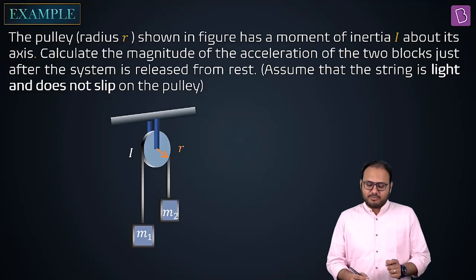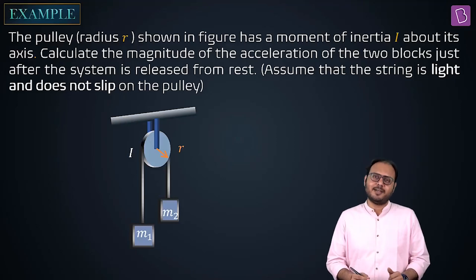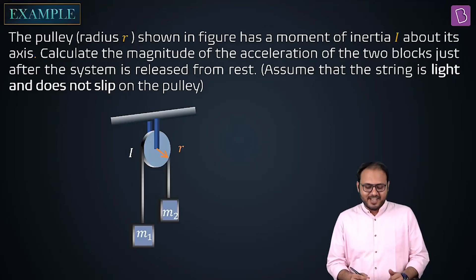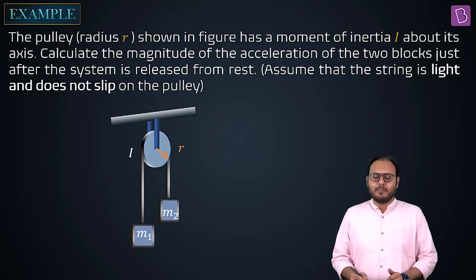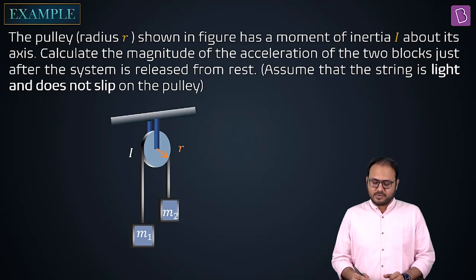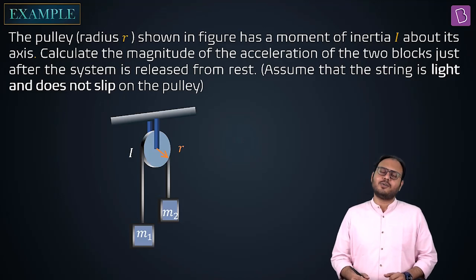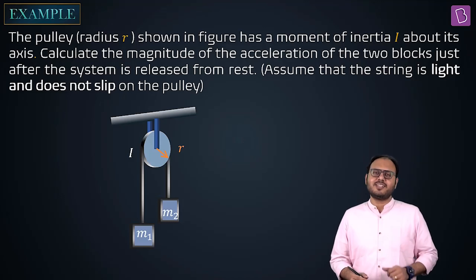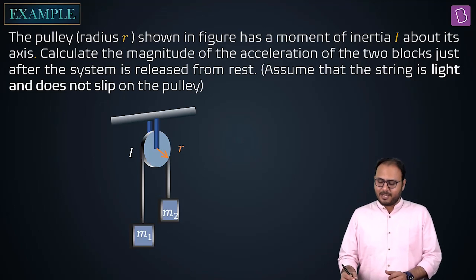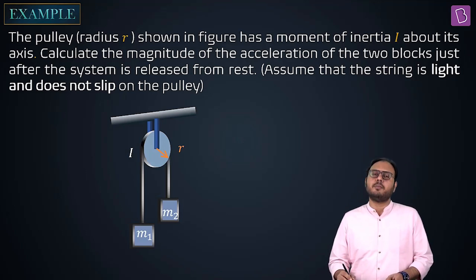The pulley shown in the figure has a moment of inertia I about its axis. Calculate the magnitude of the acceleration of the two blocks just after the system is released from rest. This is your typical Atwood machine. Assume that the string is light and does not slip on the pulley.